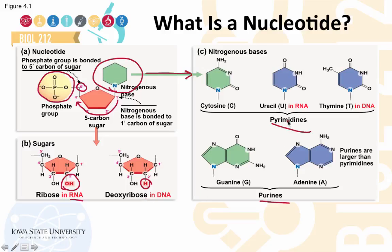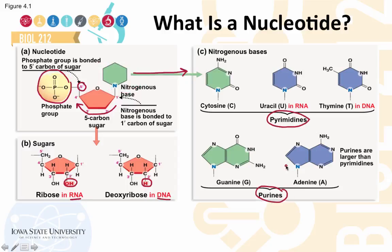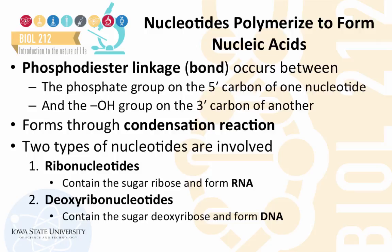The nitrogenous base can be a pyrimidine or a purine. It is the sequence of these bases that stores genetic information in nucleic acids. These monomeric nucleotides polymerize to form nucleic acids. The linkage that forms between nucleotides is called a phosphodiester linkage.